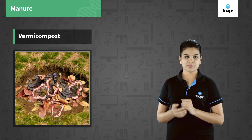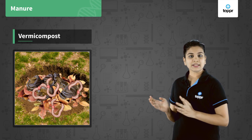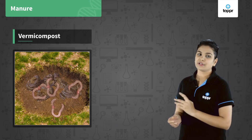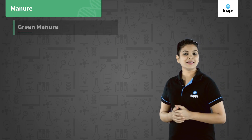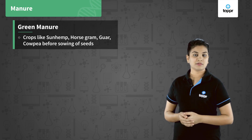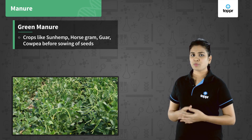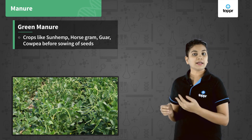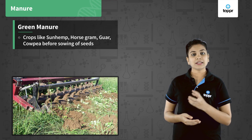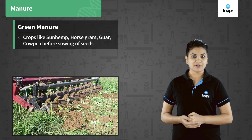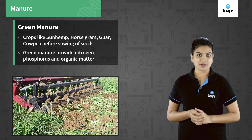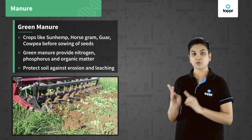Vermicompost is a process of degrading organic matter in pits with the use of worms, which increase the rate of decomposition. Green manure is prepared by cultivating fast-growing green manure crops like sunhemp, guar, and cowpea. Once cultivated, these crops are mulched into the soil while plowing, before sowing the main crops. Green manure provides nitrogen, phosphorus, and organic matter to the soil, and also protects the soil against erosion and leaching.